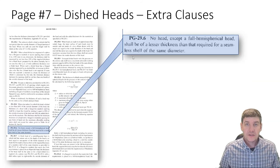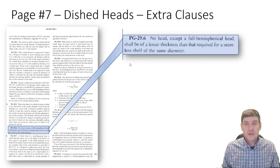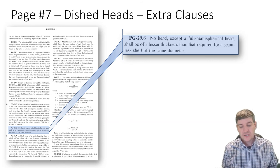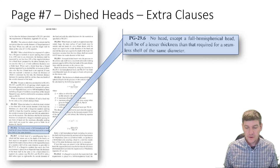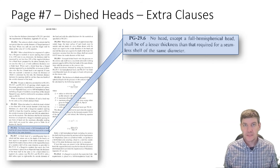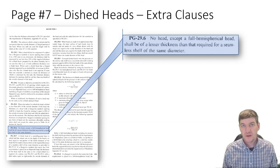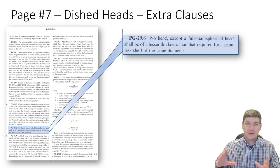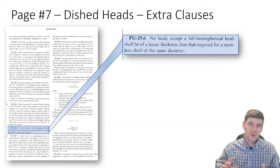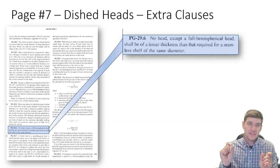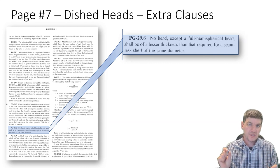We have one final clause, PG 29.6. It says no head, except for a full hemispherical head (the only exception), shall be of a lesser thickness than that required for a seamless shell of the same diameter. We have to look at the area it would attach to and get an idea of what thickness is required there if it was a seamless shell.